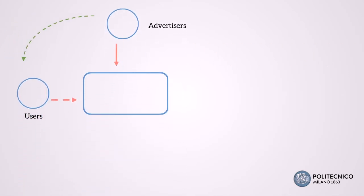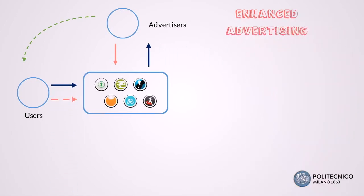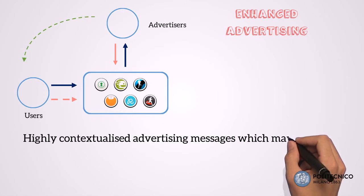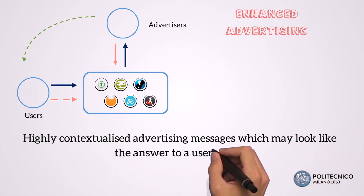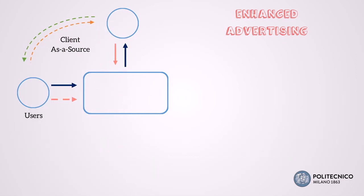Our research highlights three different models that companies can rely on to capture the value embedded in big data through a two-sided structure. In the first one, enhanced advertising, the data gathered from the first side are provided to the second one, where we can still find the advertisers. This data can be used to offer highly contextualized advertising messages that may look like the answer to what users are searching for in that precise moment. In this way, the first side is not just a target, but a source of value that can be captured, introducing a second strategy called client-as-a-source, represented through the orange arrow.